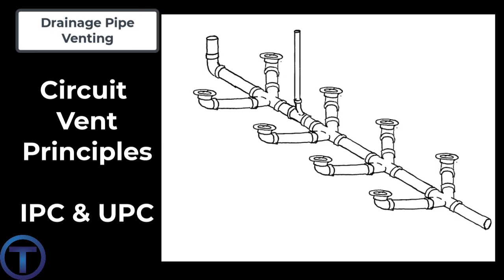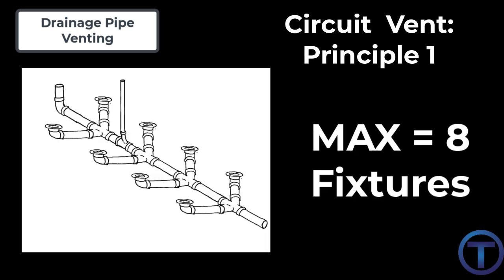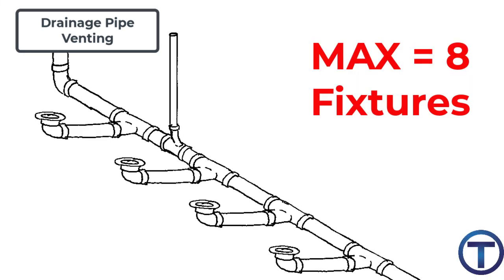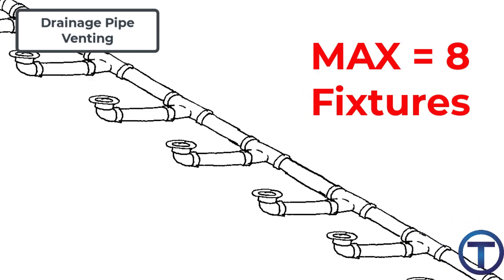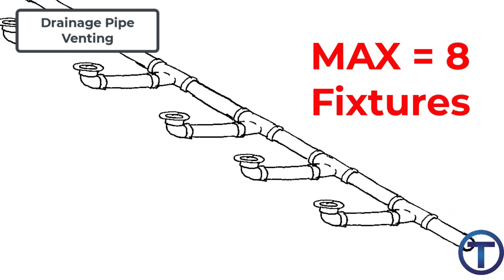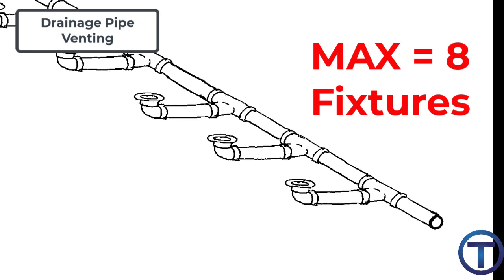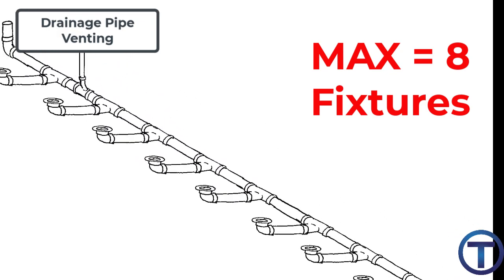Let's have a look at the basic principles governing the installation of circuit vents. These principles come from both the International Plumbing Code and the Uniform Plumbing Code. Circuit vent principle one: no more than eight fixtures connecting to a horizontal branch are permitted to be circuit vented. That really provides a lot of latitude — you can have up to eight fixtures connected to this horizontal branch, being served by a single circuit vent.